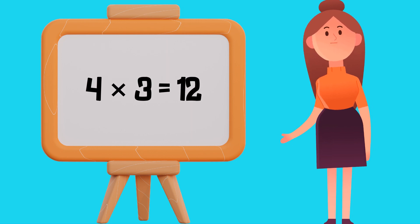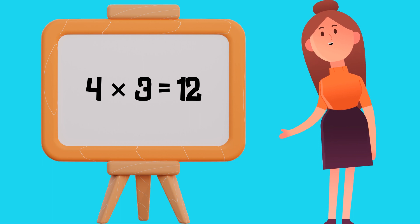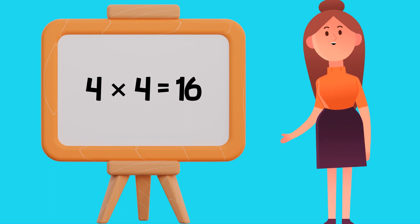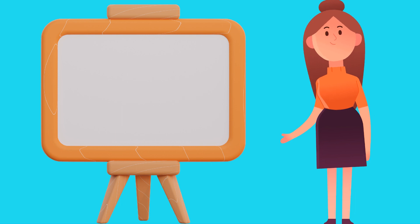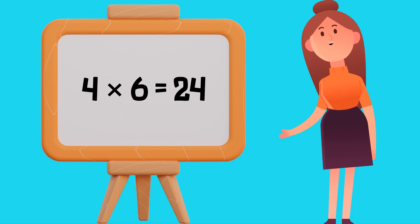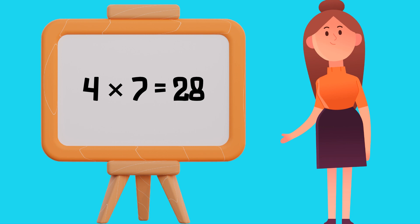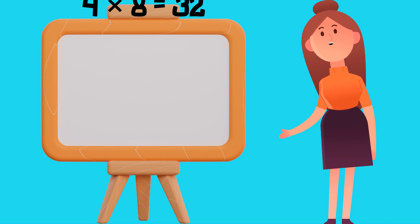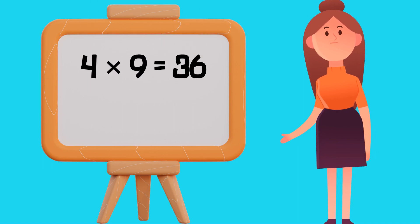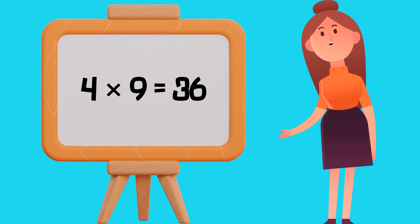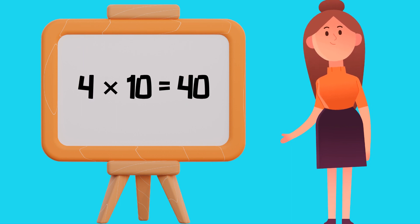Table of 4: 4 1's are 4, 4 2's are 8, 4 3's are 12, 4 4's are 16, 4 5's are 20, 4 6's are 24, 4 7's are 28, 4 8's are 32, 4 9's are 36, 4 10's are 40.